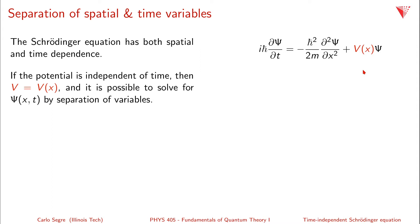Now, if the potential here is not a function of x and t, but only a function of x, then it's possible to solve for Ψ of x and t by separation of variables. What we do is assume that Ψ of x and t is a product of two functions — one which is only dependent on space and the other only dependent on time — so ψ of x times φ(t).